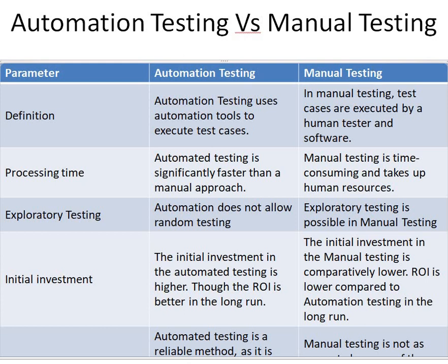The first parameter is definition. Automation testing uses automated tools to execute test cases, whereas in manual testing, test cases are executed by a human tester.